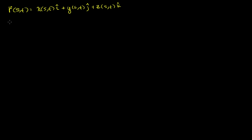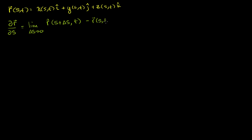So let's define the partial derivative of r with respect to s. Everything I do with respect to s, you could swap with t and get the same result. I'm going to define it as the limit as delta s approaches 0 of r of s plus delta s, comma t — we're only finding the limit with respect to a change in s, holding t constant — minus r of s and t, all over delta s.